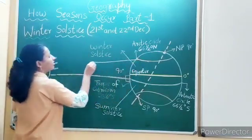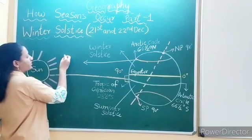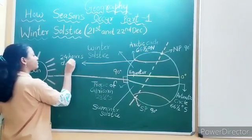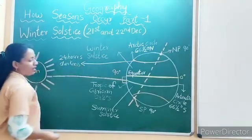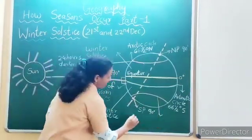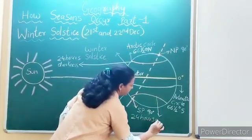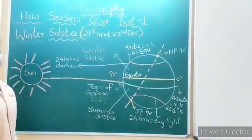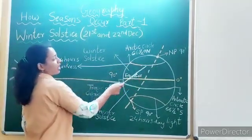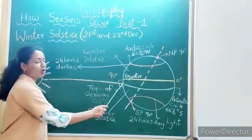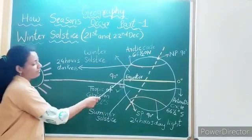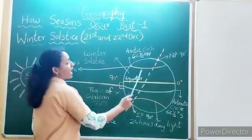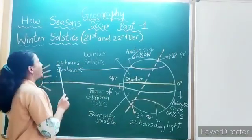Besides this, the Arctic Circle will receive 24 hours of darkness and the Antarctic Circle will receive 24 hours of daylight. As sun rays are perpendicular on the Tropic of Capricorn, maximum solar radiation is received in the southern hemisphere. Due to the tilt of the axis, sun rays are not able to reach the Arctic Circle, which results in 24 hours of darkness there.